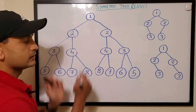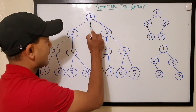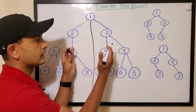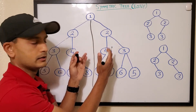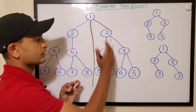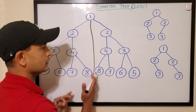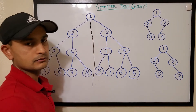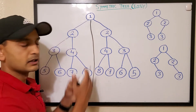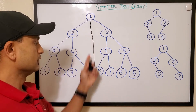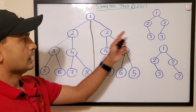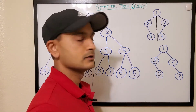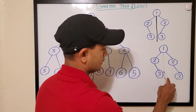Let's say if this is our tree and we draw a line in the middle, the left tree should be a replica of the right tree. If you draw this tree on a paper and fold it in the middle, they should exactly overlap each other — it's a mirror image. So this is a symmetric tree, and if we draw a line here, this is also a symmetric tree.